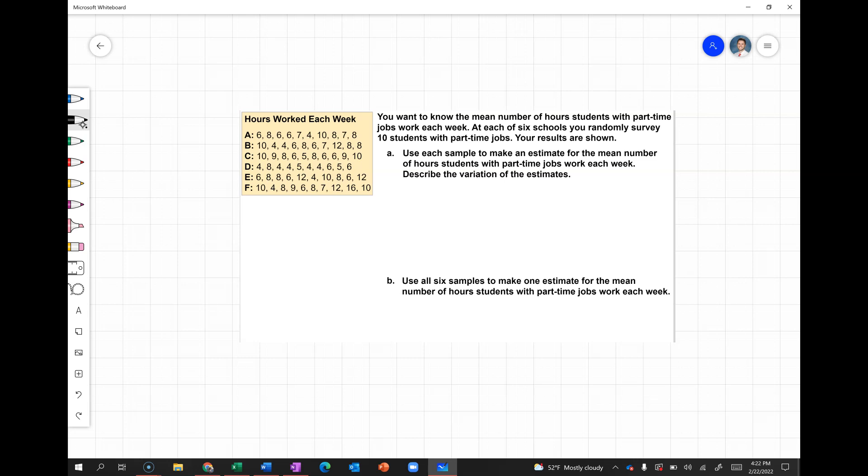So let's start with A. We want to find the mean for A, so that's going to be 6 + 8 + 6 + 6 + 7 + 4 + 10 + 8 + 7 + 8, all divided by 10. So 6 + 8 is 14 + 6 is 20 + 6 is 26 + 7 is 33 + 4 is 37 + 10 is 47 + 8 is 55 + 7 is 62 + 8 is 70. And then we're dividing by 10, so 70 divided by 10. For school A, we have a mean of 7.